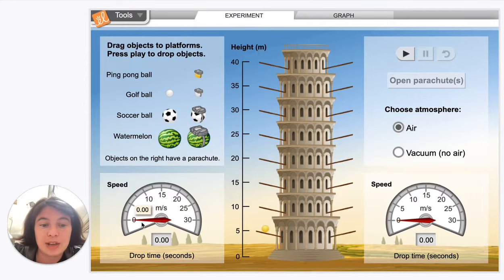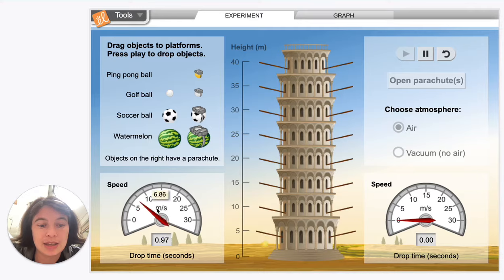So watch this little red arrow and how it increases over time as this object accelerates. If we drop this from 5 meters, you can see the velocity increased up to 7.32 meters per second, and it took a time of 1.13 seconds to fall.